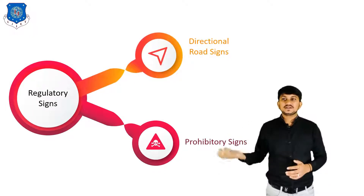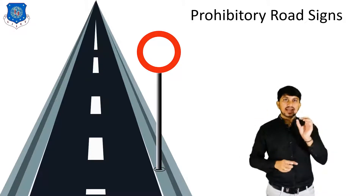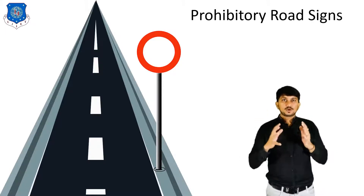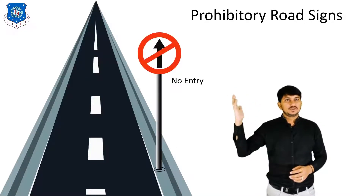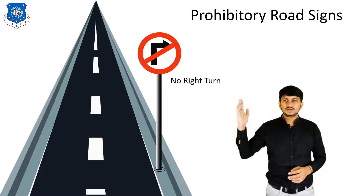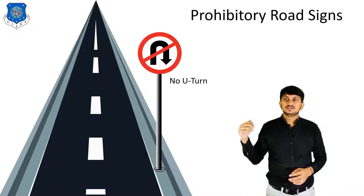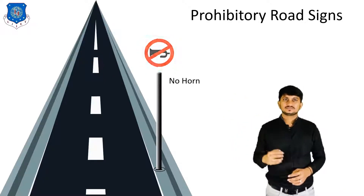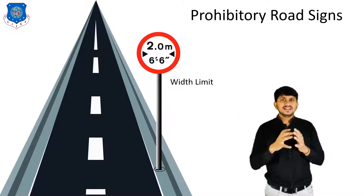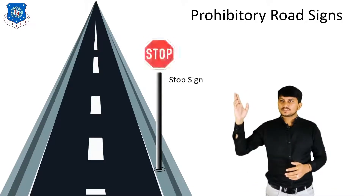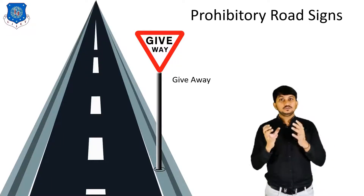Now let's discuss Prohibitory Signs. They have a white background, red border, and black symbols. Different types of Prohibitory Signs are like No Parking, No Entry, No Left Turn, No Right Turn, No Over-Taking, No Stopping, No U-Turn, No Horn, Speed Limit, and Width Limit. There are also a few different cases like Stop Sign and Give Way Sign which have their own unique symbols.